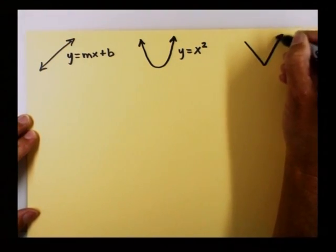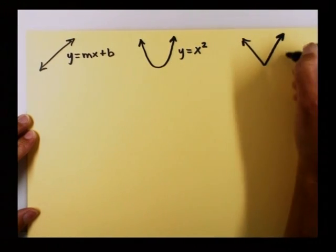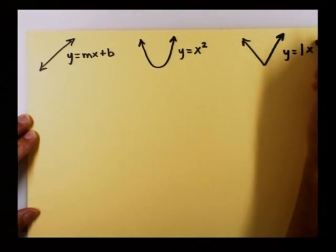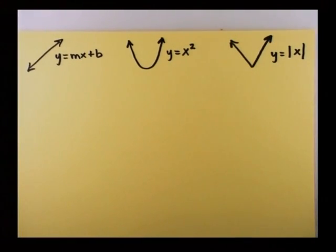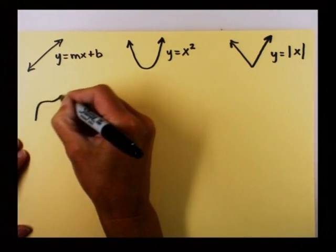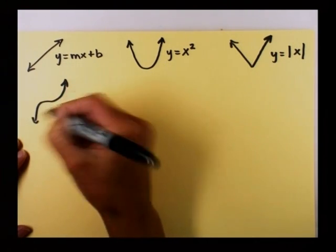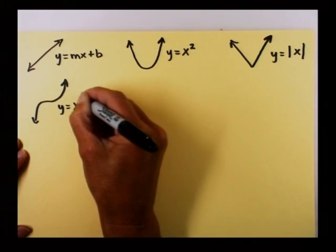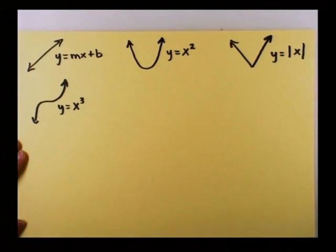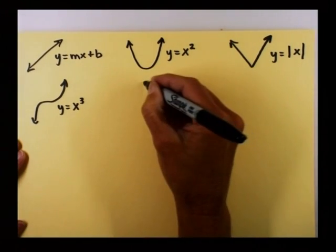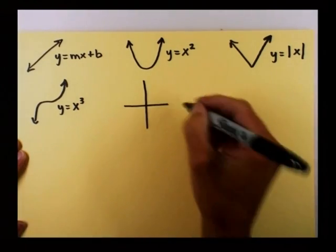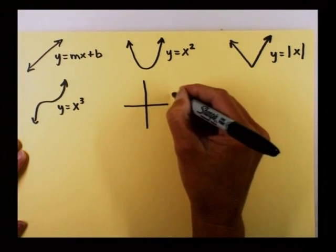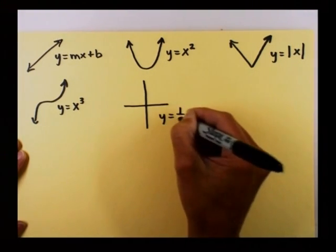Absolute values are the v-shaped graphs that we work with. A little more tricky here, but I'm going to assume that you have worked with a cubic, y equals x cubed. Rational function, y equals 1 over x.